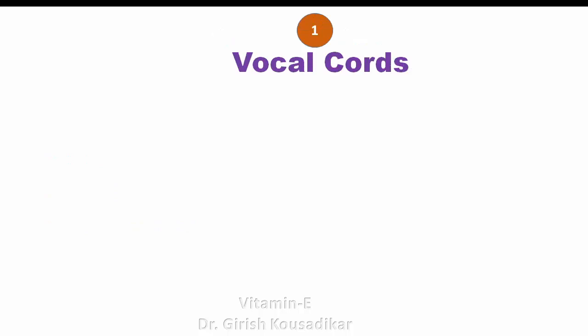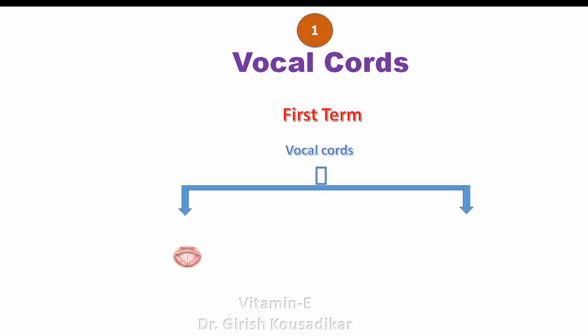What do we mean by the first term — vocal cords or voicing? The position of the vocal cords and how they work in the production of a particular sound describes the first term. It is divided into two broad categories: one is voiced and the other is voiceless.